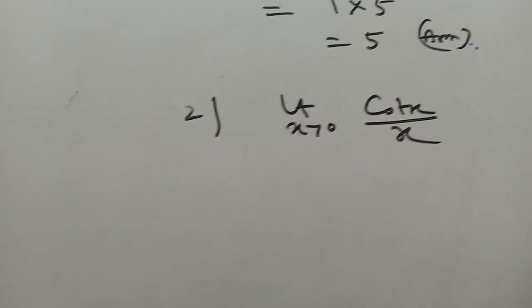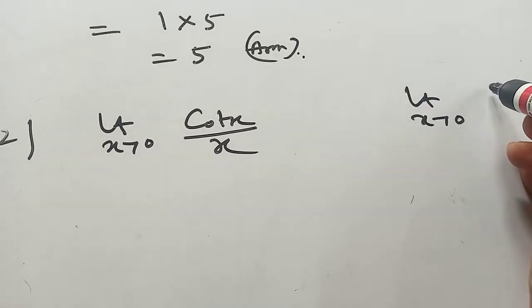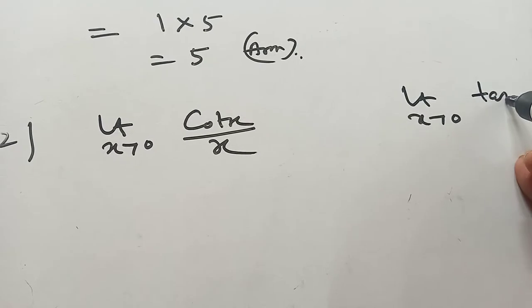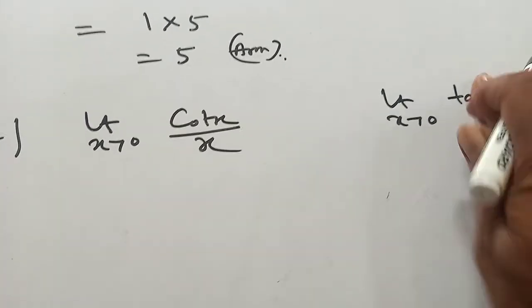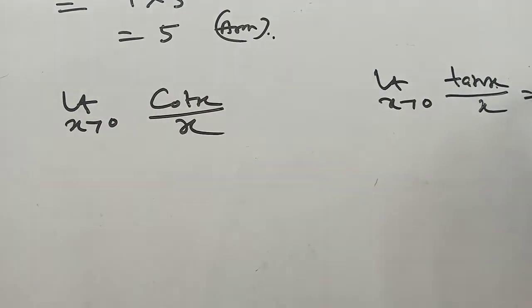We know that limit as x tends to 0 of tan x by x equals 1.